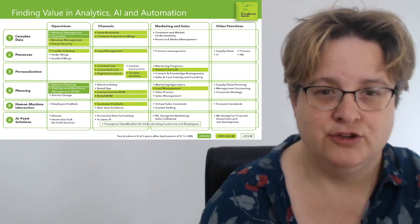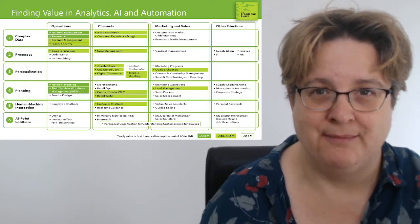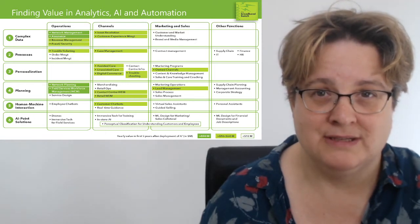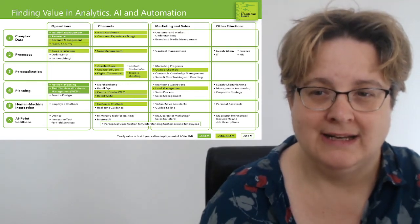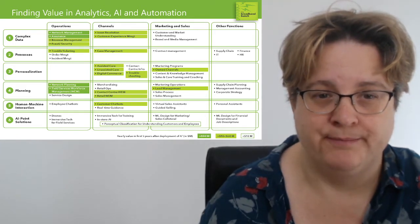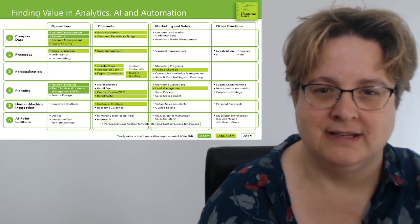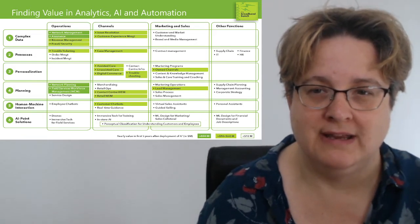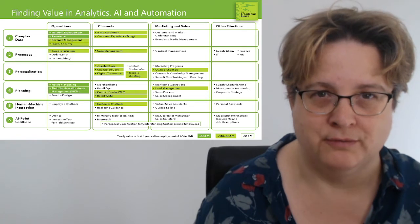Rows five and six include use cases one might include under the heading of artificial intelligence. Row five is where humans and machines interact, and analytics and AI such as natural language processing are useful. Row six includes a range of what one might call point solutions specifically requiring new types of A3, such as drones or in-store robots.